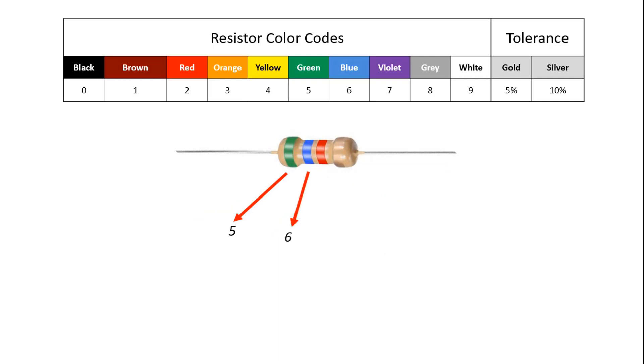Anyhow, a resistor with the markings green, blue, red, and gold will translate as follows: 5 green, 6 blue, times 100 equals 5600 ohms, or 5.6 kilo ohms with a tolerance of plus or minus 5%.